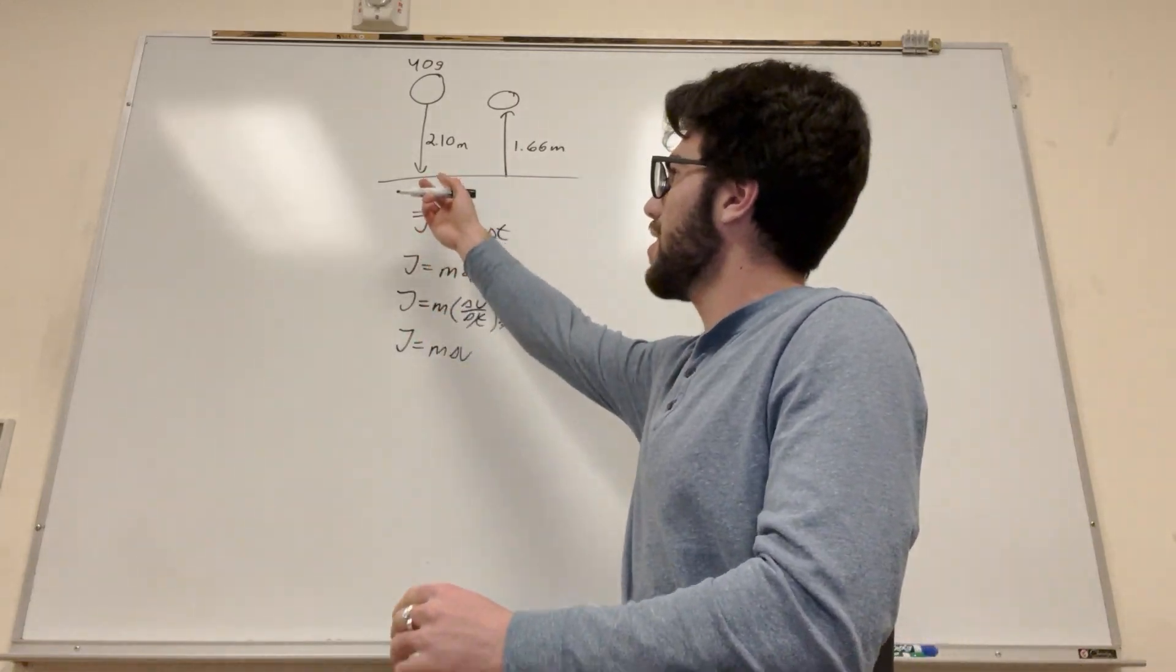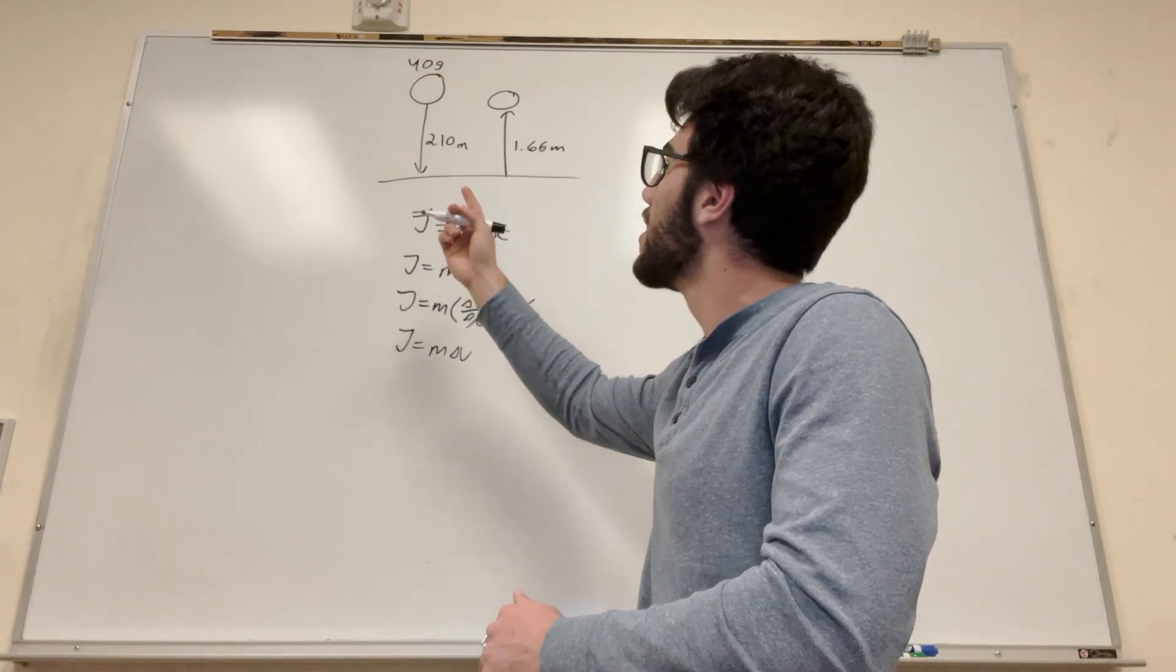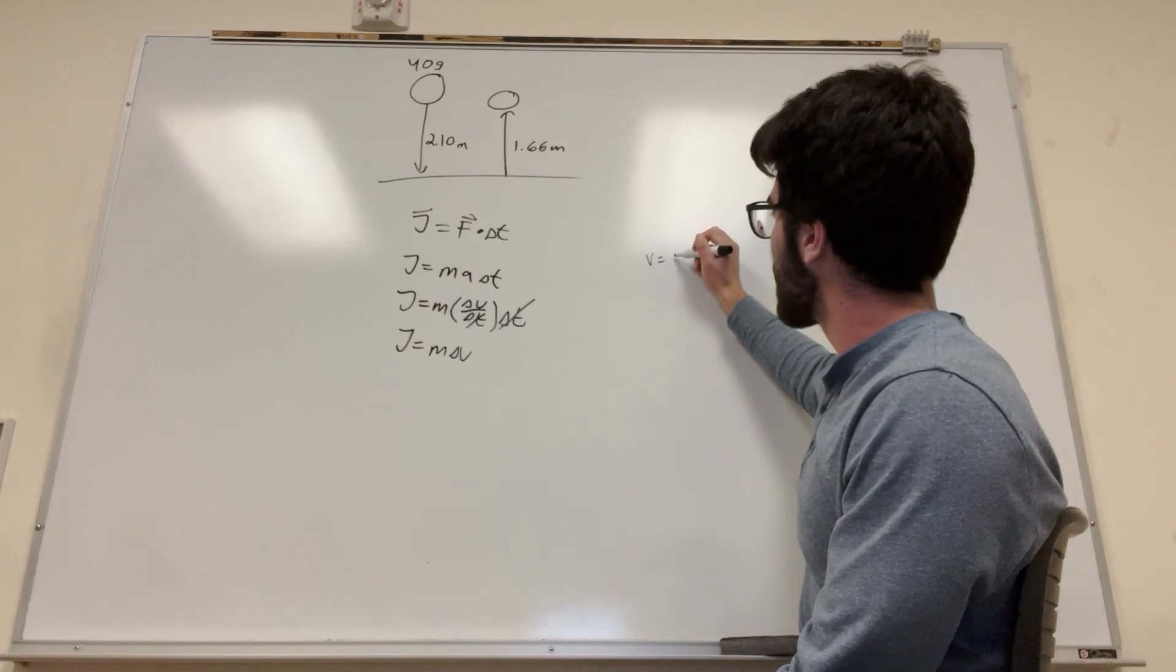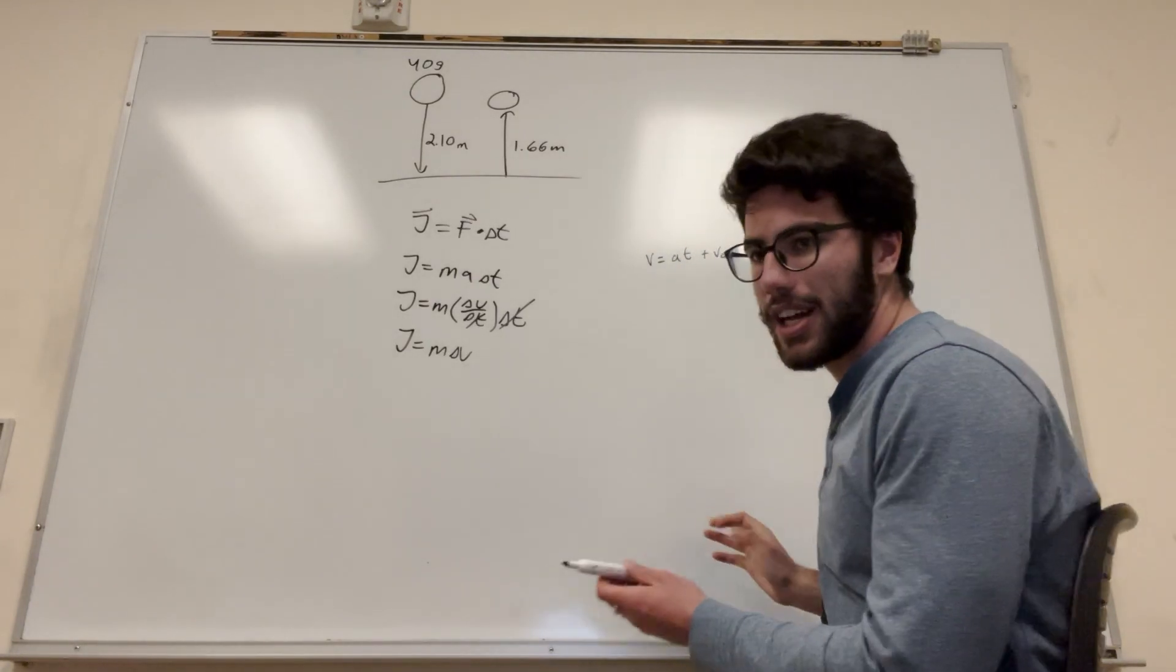Well, to do that, we want to find the velocity, like the moment before it hits the ground, and then the moment right after it hits the ground. So to do that, we can use some of our kinematics formulas. So we know that velocity is equal to acceleration times time plus initial velocity, but we actually don't want to use that.